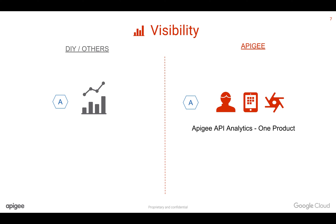Apigee Edge can give end-to-end visibility through API analytics. In the Apigee Edge API management platform, everything works seamlessly — you don't need to do anything extra. Apigee automatically retrieves all the API meta info associated with the token and presents intelligent analytics to you. API analytics in Apigee Edge platform is a first-class citizen.